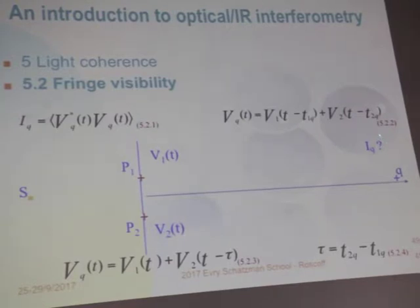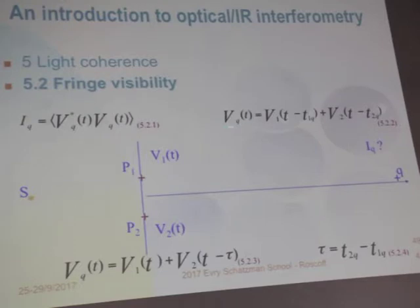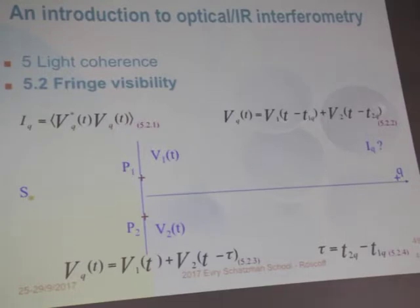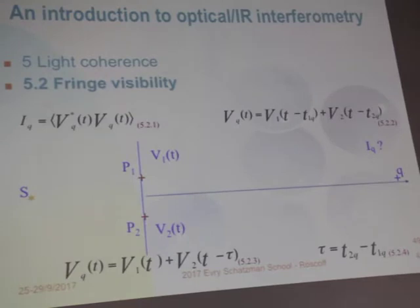I'm interested in the distribution of intensity on the screen. The intensity is the time average of the electric field times its conjugate. The electric field at point Q on the screen is the field from P1 evaluated at time t minus the propagation time from hole one to Q, plus the field from P2 evaluated at time t minus the propagation time from hole two to Q. I change the time reference by adding T1Q to both terms, rewriting the field at Q as E1(t) plus E2(t − τ), where τ is the path length difference divided by c.